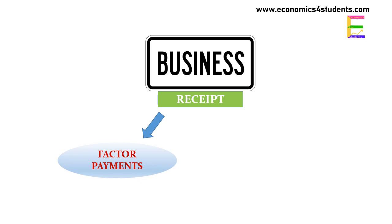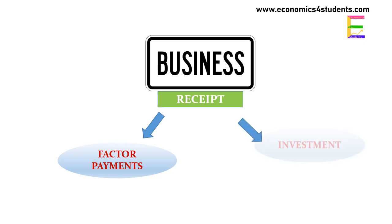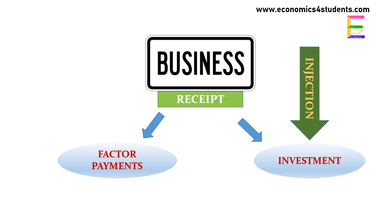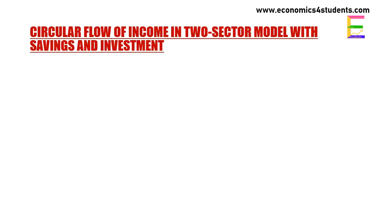Similarly, firms distribute part of their receipts to households as factor payment, and the remaining part they keep as undistributed profit for undertaking investment. So investment is an addition to the circular flow of income, and it is called an injection into the circular flow.